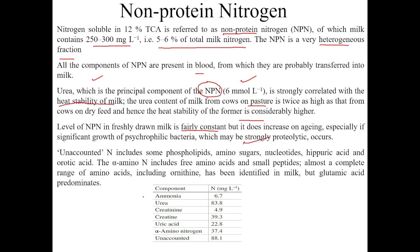The components forming part of NPN include: urea (the major one), ammonia, creatinine, creatine, uric acid, alpha-amino nitrogen, and some unaccounted nitrogen. The unaccounted nitrogen includes nitrogen from phospholipids, amino sugars, nucleotides, hippuric acid, orotic acid, free amino acids, and small peptides. Almost a complete range of amino acids is present, with glutamic acid predominating among the known amino acids.